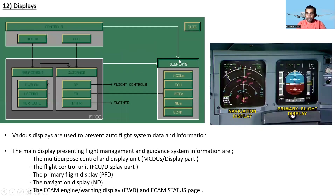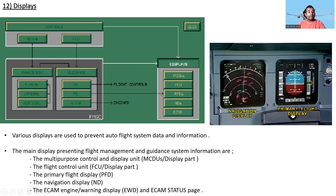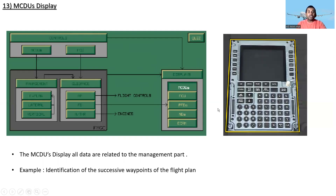Various displays are used to present autoflight system data and information. Here you can see the Primary Flight Display and Navigation Display. The main displays presenting flight management and guidance system information are: the Multipurpose Control and Display Unit (MCDU), the Flight Control Unit (FCU), the Primary Flight Display (PFD), Navigation Display (ND), the ECAM Engine Warning Display (EWD), and the ECAM Status Display.